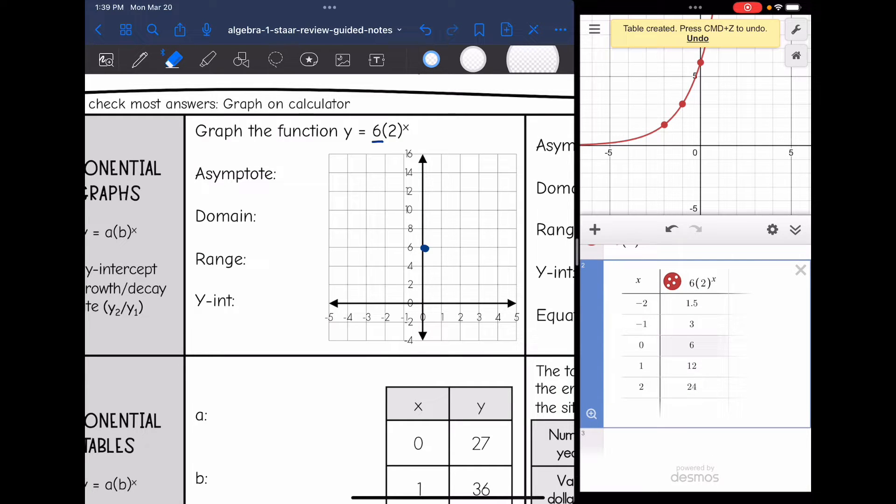So negative two, 1.5, which is really close to two, is the first point I see. I can plot negative one, three, halfway between two and four, and then I already plotted zero, six. And then one, 12, looks like that's the last point that will fit on here. So there is my exponential graph.